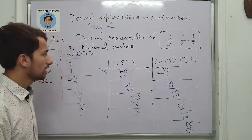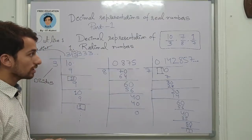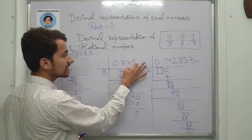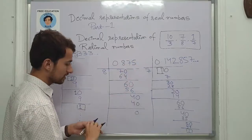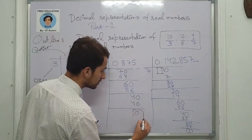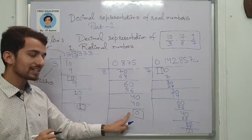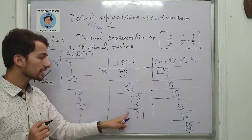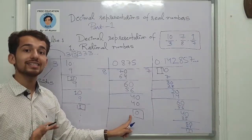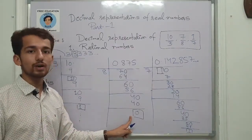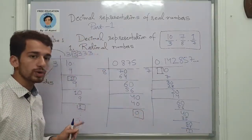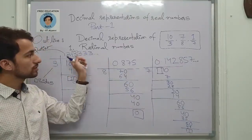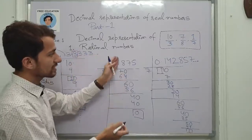The third observation is that in the case where the quotient terminated, the remainder was 0. This is important: it means you were able to divide the number completely by the divisor, so nothing remains to be divided. In the repeating cases the remainders are non-zero, meaning you were not able to divide the number completely, so there are continuing decimals. These are their decimal representations in terms of the quotient.